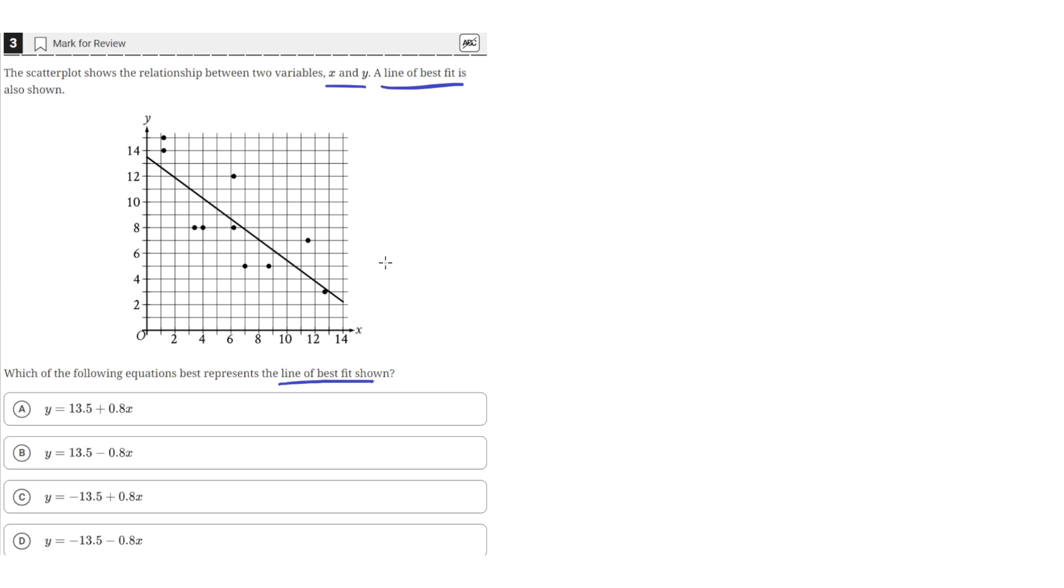Looking at this line of best fit, we see that it has a negative slope. We know it's negative because as x increases on the x-axis, the value of y is going down. So the line is pointing down, it's downward sloping, which means the slope is negative. So we can look at the answer choices and see which ones have negative slopes.